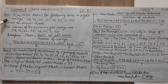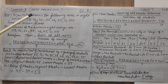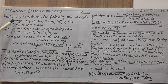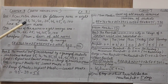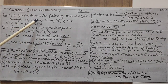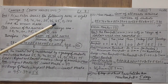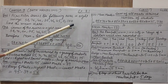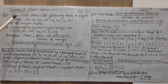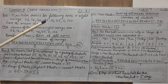The first question from exercise 3.1 is: a cricketer scores the following runs in 8 innings. The runs are 58, 76, 40, 35, 46, 45, 0, and 100. These are the runs in the 8 innings.